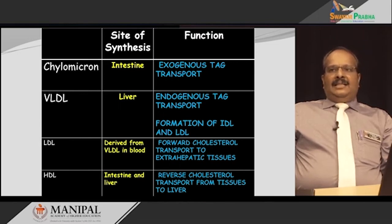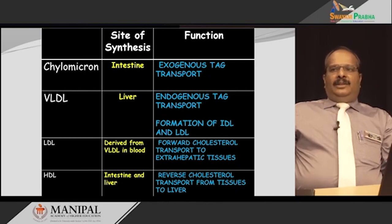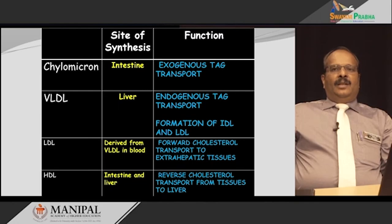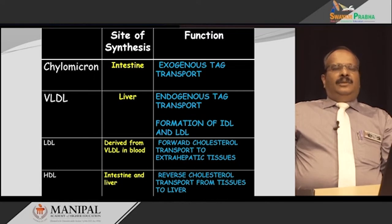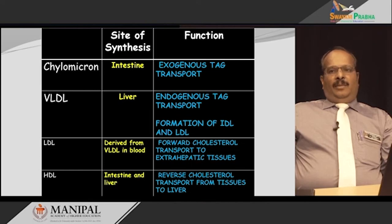Chylomicron is synthesized in the intestine and is responsible for the transport of dietary triacylglycerol to different parts of the body. Very low density lipoprotein is generated in the liver and is responsible for the endogenous transport of triacylglycerol. It is also the precursor for the formation of intermediary density lipoprotein and low density lipoprotein.